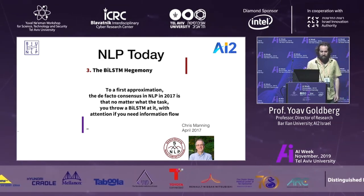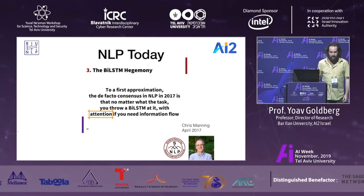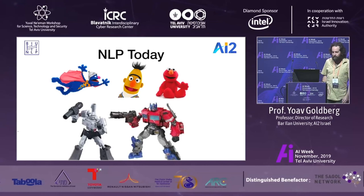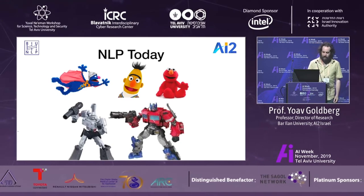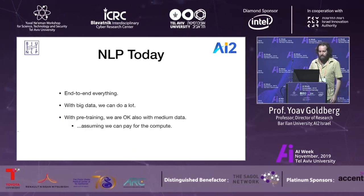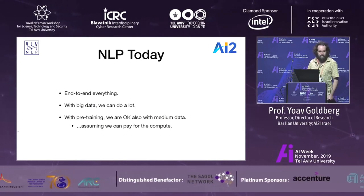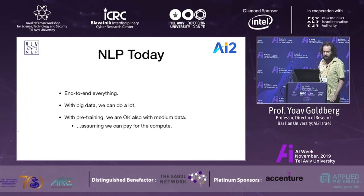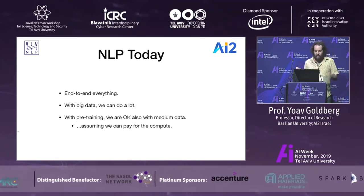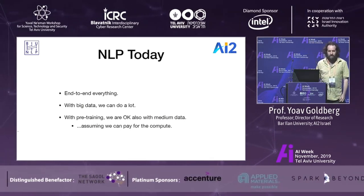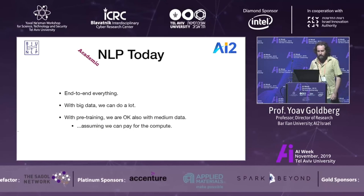Things haven't changed much since — now we only focus on attention without the BiLSTM. We have all these models: ELMo, BERT, Grover, Transformer models, and so on. They actually work pretty well. The trend is basically end-to-end everything. With big data, these things learn well and we get amazing results. With pre-training we're also okay with medium-sized data, assuming we can pay for the compute, because these very large models are pretty expensive to run.